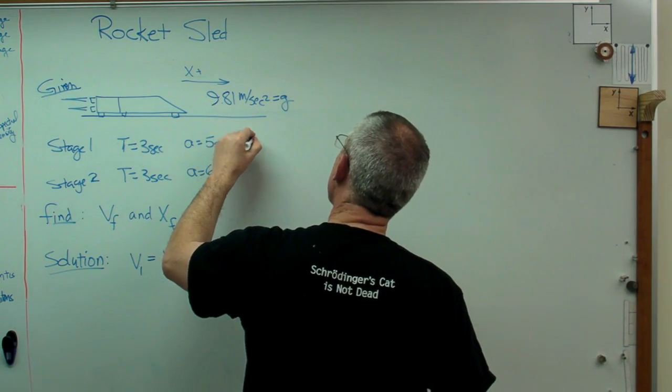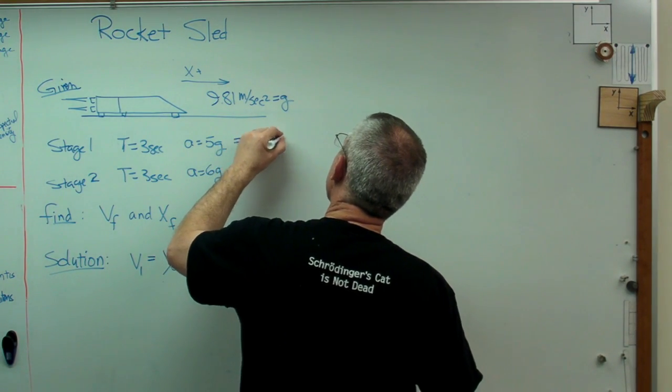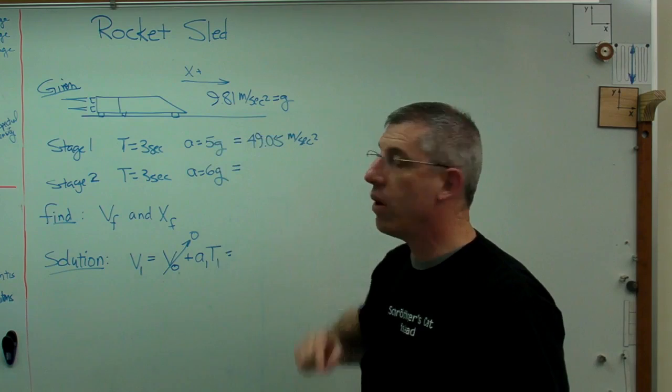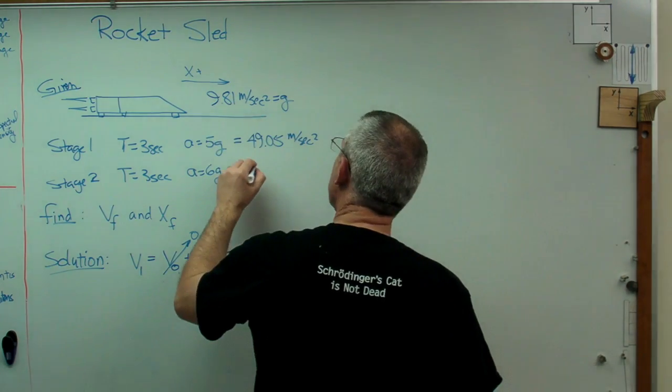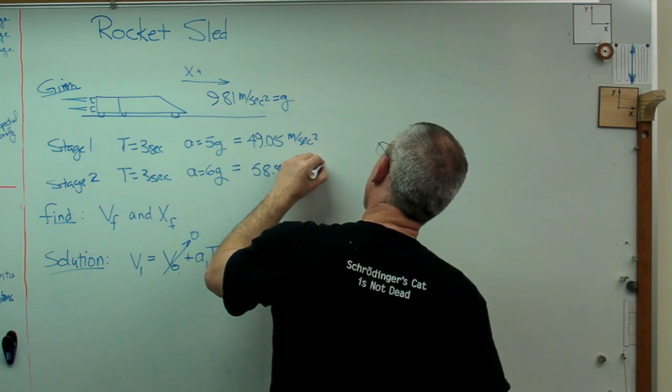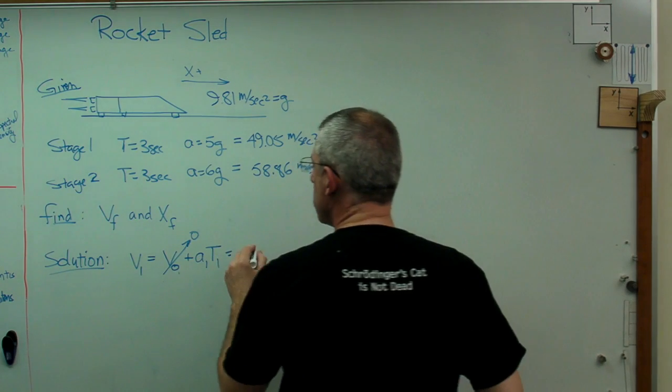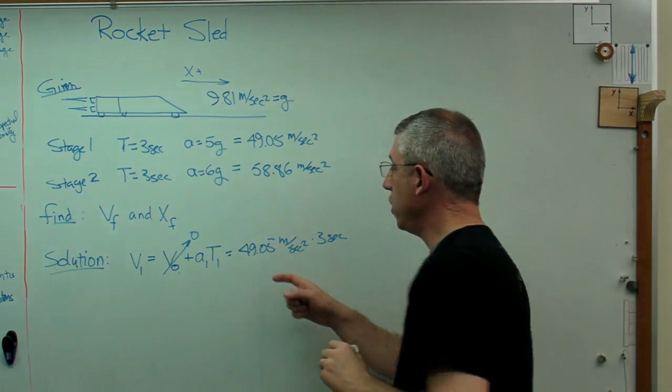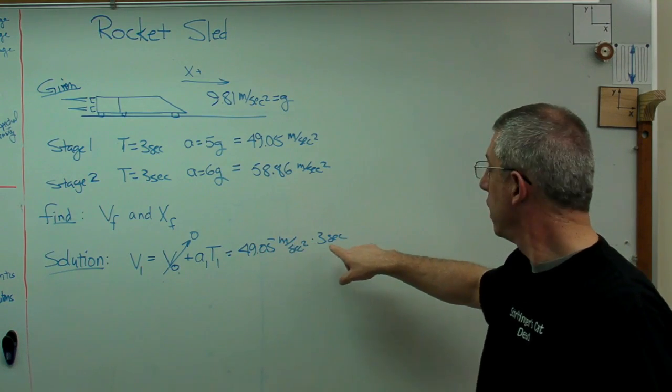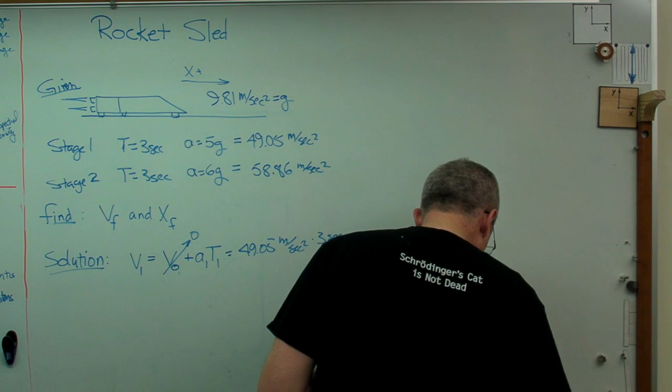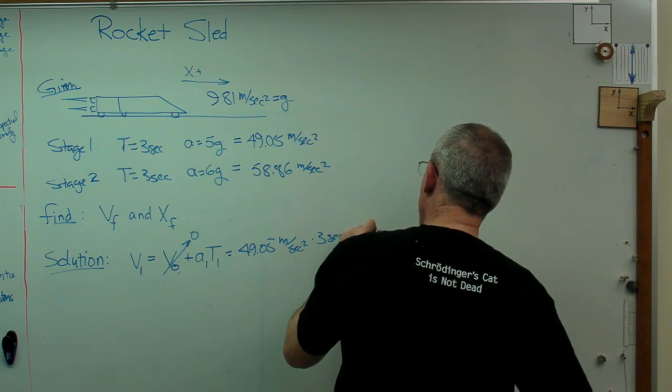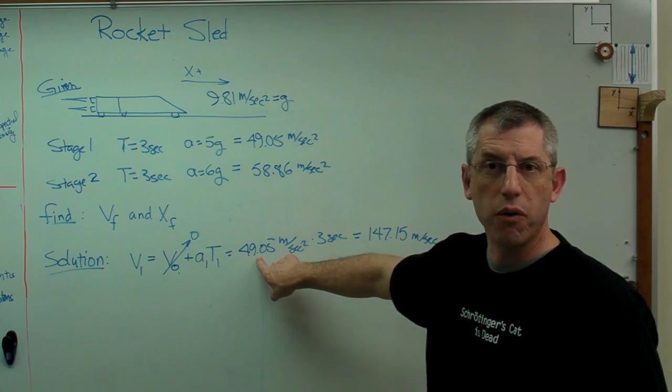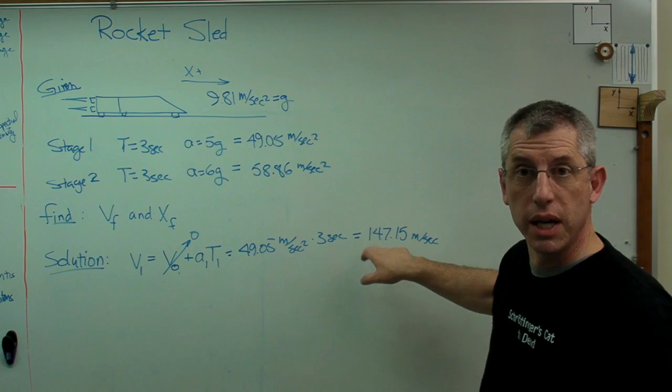So it's going to be a little less than 50. It turns out to be 49.05 meters per second squared. Well, 6 G's ought to be a little less than 60, and it turns out to be 58.86 meters per second squared. All right. So we've got some numbers there. So this is going to turn out to be 49.05 meters per second squared times three seconds. And of course the units are going to work out. So when I do that, V1 is 147.15 meters per second. Well, that makes sense since that's about 50 and that's three. So whatever I get ought to be a little less than 150. It is. So that checks.